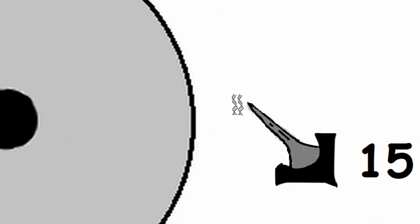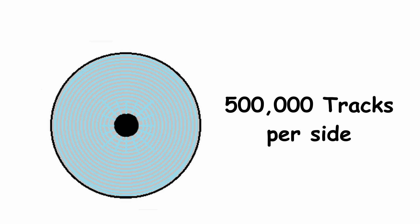The disk itself is divided into circular tracks, much like the rings in the center of a tree. Some disks have up to 500,000 tracks per side, and these tracks are further divided into sectors, each of which stores a fixed amount of user-accessible data.